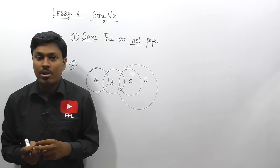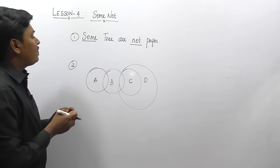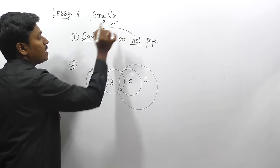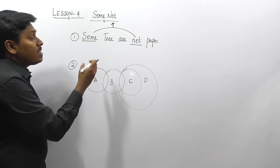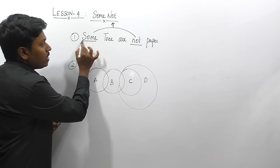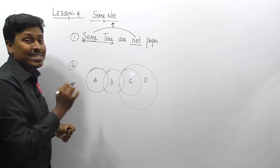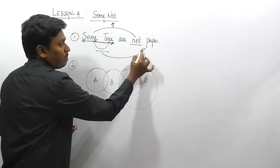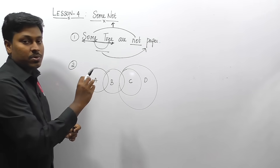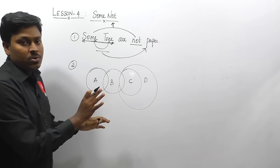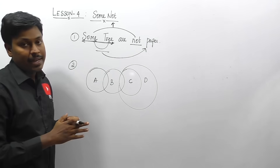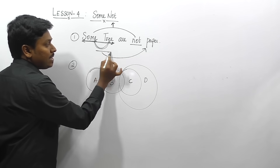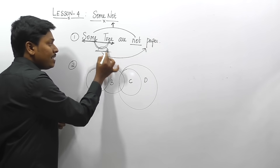Before solving the questions, you should know two important concepts. Concept one: if the conclusion is like 'some tree are not paper', we call this a 'some not' conclusion. To check whether it is true or false in the Venn diagram, read the first two words alone — 'some tree' — find which region is 'some tree', and check that region is not paper.